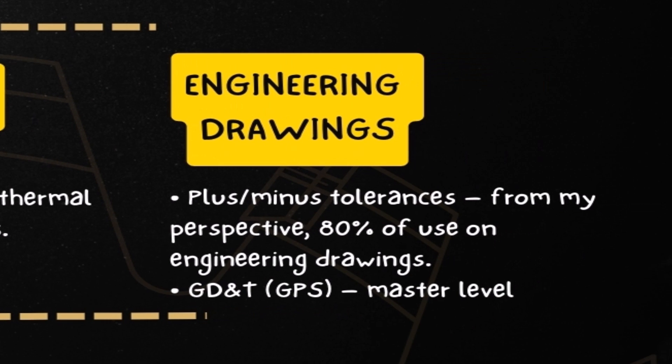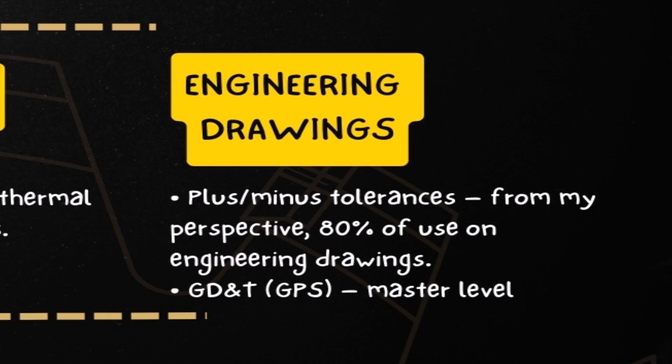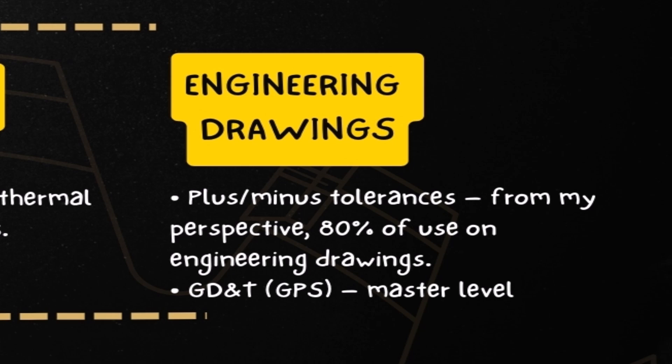Engineering drawings teaches the creation and interpretation of technical drawings — an essential skill for communicating design intent and specification. When you start working as a mechanical design engineer, you will use engineering drawings on a daily basis, either reading them or creating them. About 80% of your work will involve plus/minus tolerances, and at the master level, GD&T or GPS according to ISO. To learn about shafts and machine elements effectively, you need to know how to read engineering drawings — and the best way to learn that is to learn how to create them.